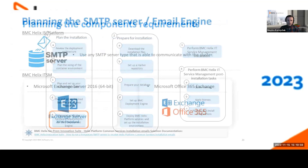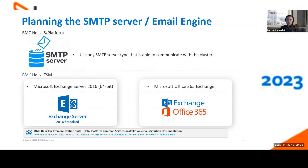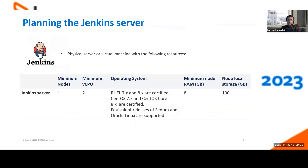For planning the Helix platform common services installation, we require an SMTP server to run the deployment manager script. You can use any SMTP server to activate tenants through email — this is for the Kubernetes cluster. For Helix ITSM, we still support Exchange Server 2016 and Office 365.